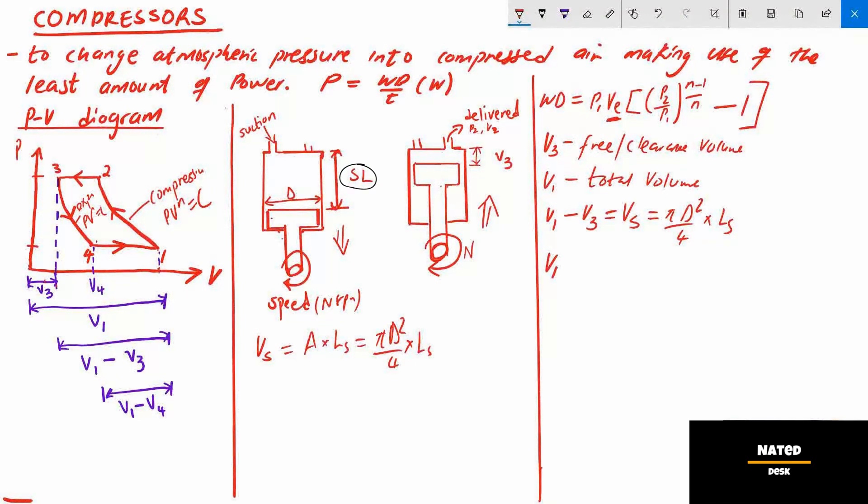Effective volume VE is equal to V1 minus V4. V4 is equal to V3 times, open brackets, P2 divided by P1. From the PV diagram P4 equals P1 and P3 equals P2.